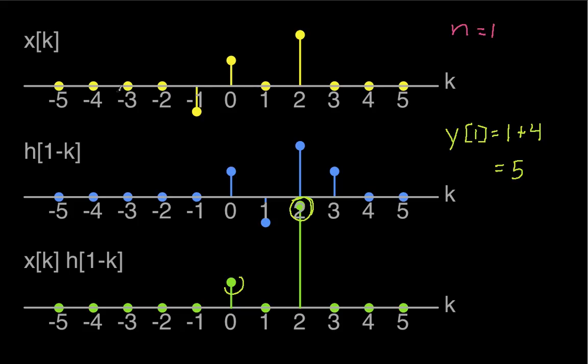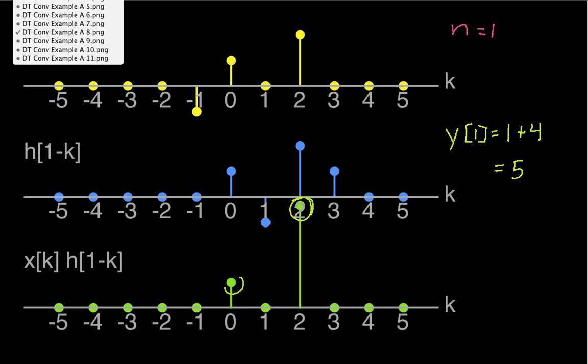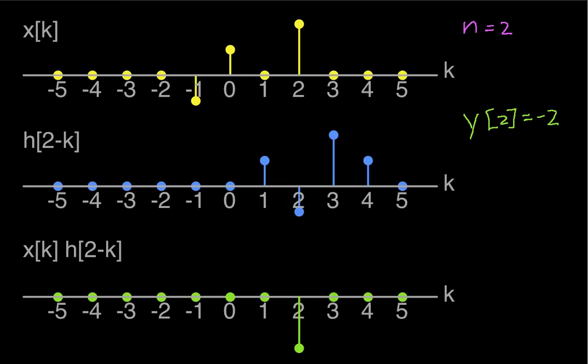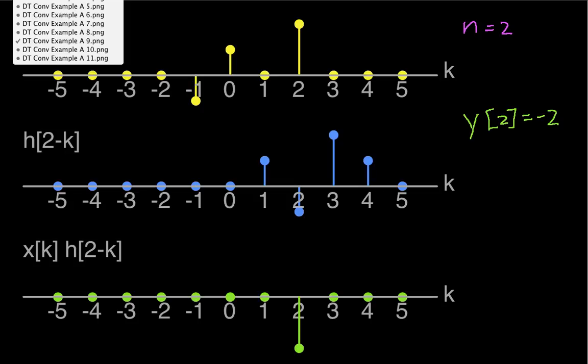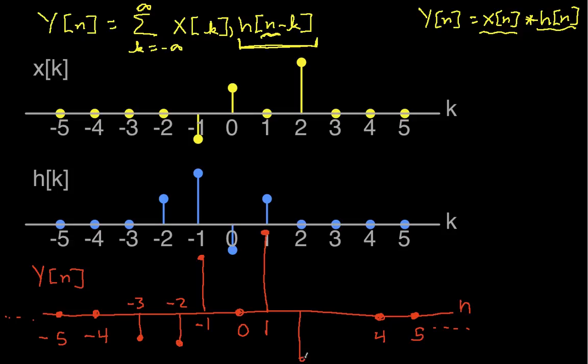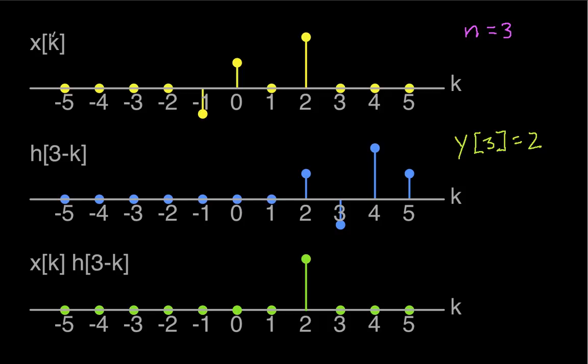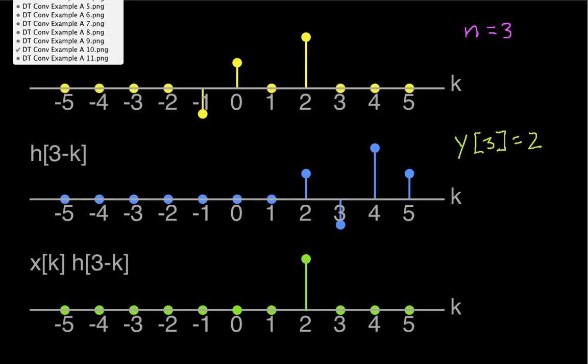At n equal one, we had y equal five. So this guy goes all the way up here. That's a value of five. At n equal two, we had y is equal to negative two. So this goes down like this. And last but not least, at n equal three, we had y of three equal to two.